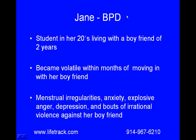Jane was a typical example of borderline personality disorder. She was a student in her 20s, living with a boyfriend of two years. She became volatile within months of moving in with her boyfriend, having developed menstrual irregularities, anxiety, panic attacks, explosive anger, depression, suicidal thoughts, and bouts of irrational violence against her boyfriend — biting, kicking, and throwing things at him.